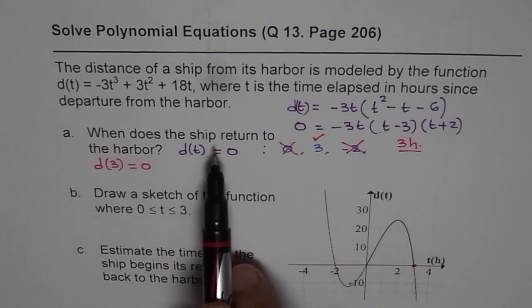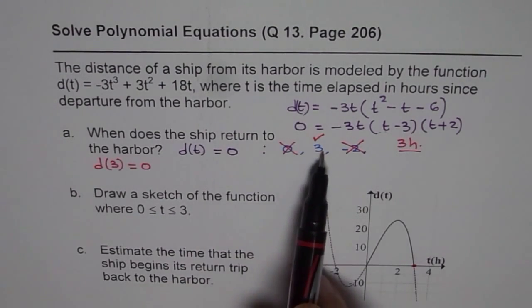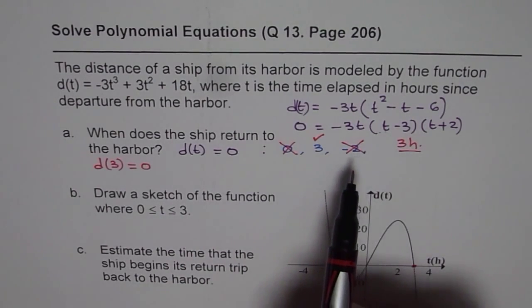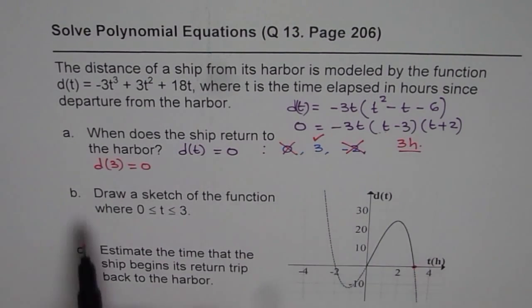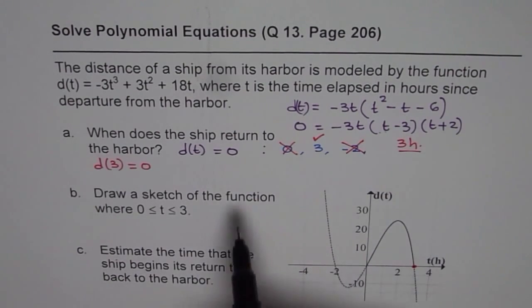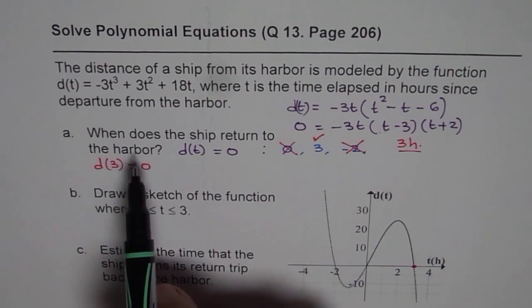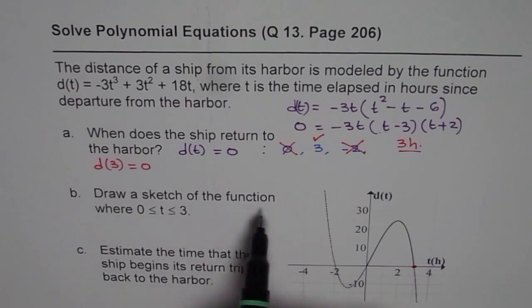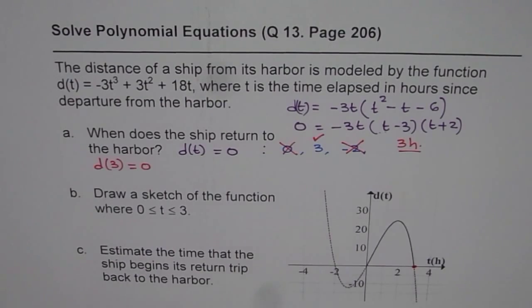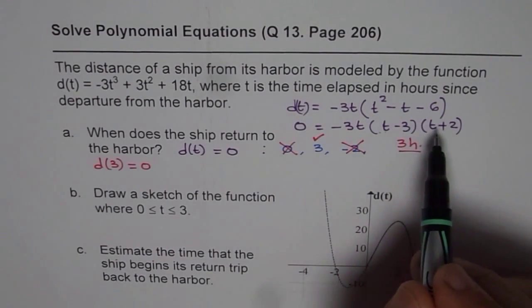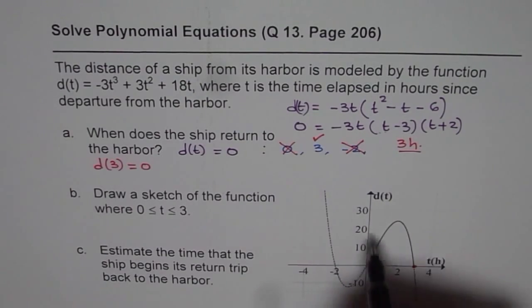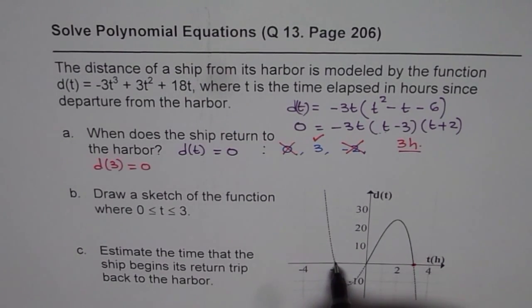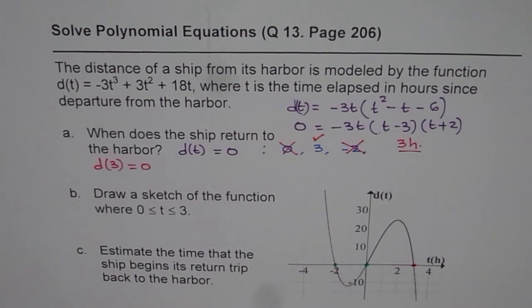You can question me why I know this is the starting and this is the ending. So it is a good time to sketch the graph, which is part B. Draw a sketch of the function from 0 to 3. When you have a function like this with 3 zeros, on the x-axis you can have those 3 zeros.